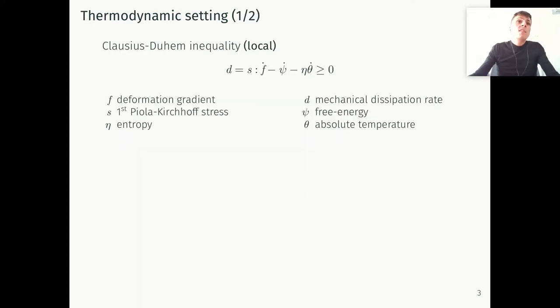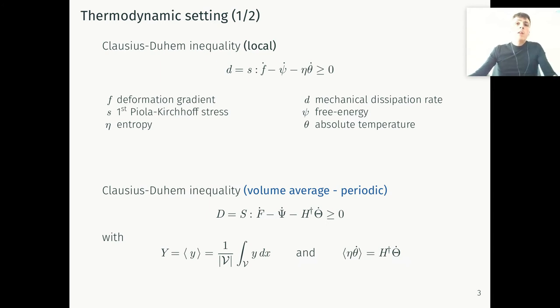Let's try to see how this can be performed. We start with the thermodynamic setting of the Clausius-Duhem inequality expressed here in local form and finite strain formulation. Lowercase letters identify volume density quantities: d, the mechanical dissipation rate; s, the first Piola-Kirchhoff stress; f, the deformation gradient; psi, the free energy; eta, the entropy; and theta, the absolute temperature. Now let's imagine we identified a unit cell, a representative volume element within our microstructure material, and assume the displacement fields are periodic along the boundary of this unit cell. We can compute the volume average of the Clausius-Duhem inequality and obtain what you see here below. Uppercase letters denote volume average of the volume density quantities we previously defined.